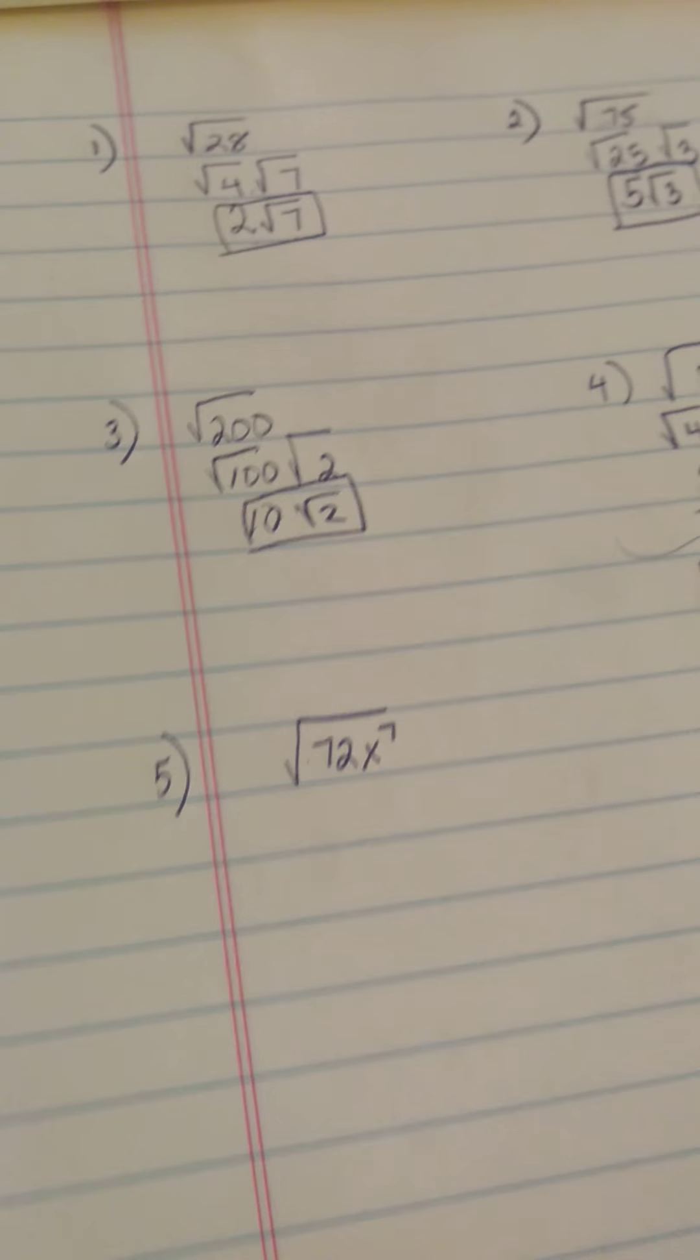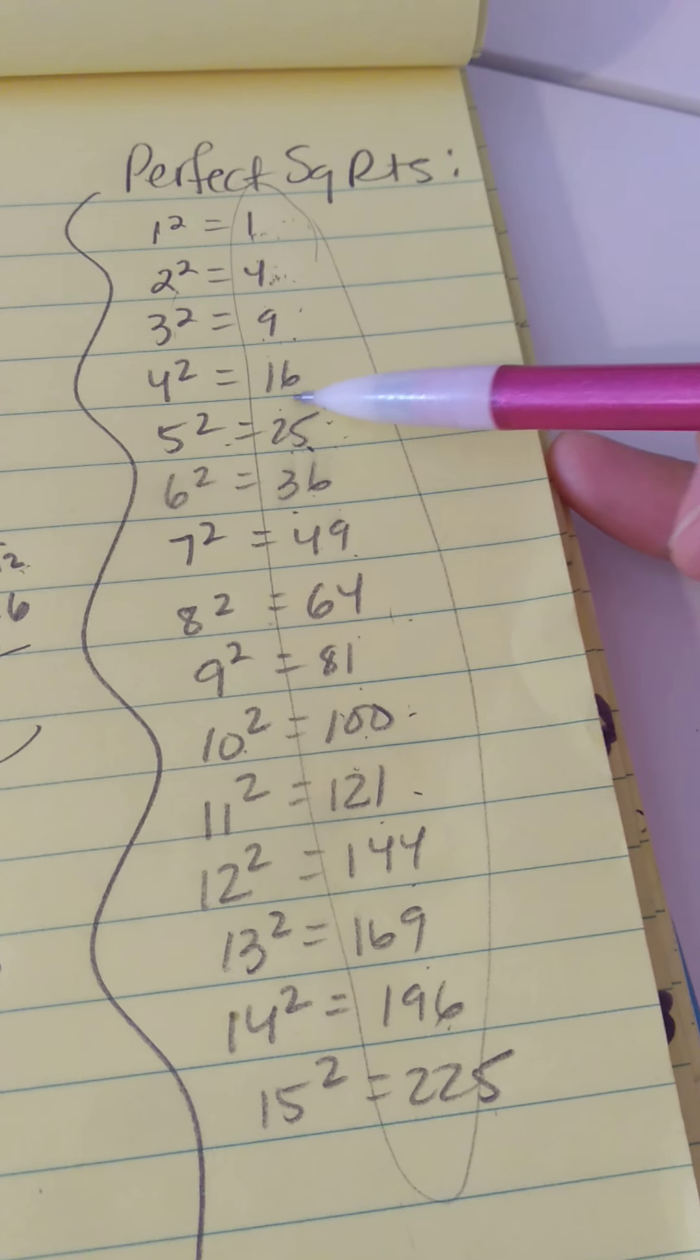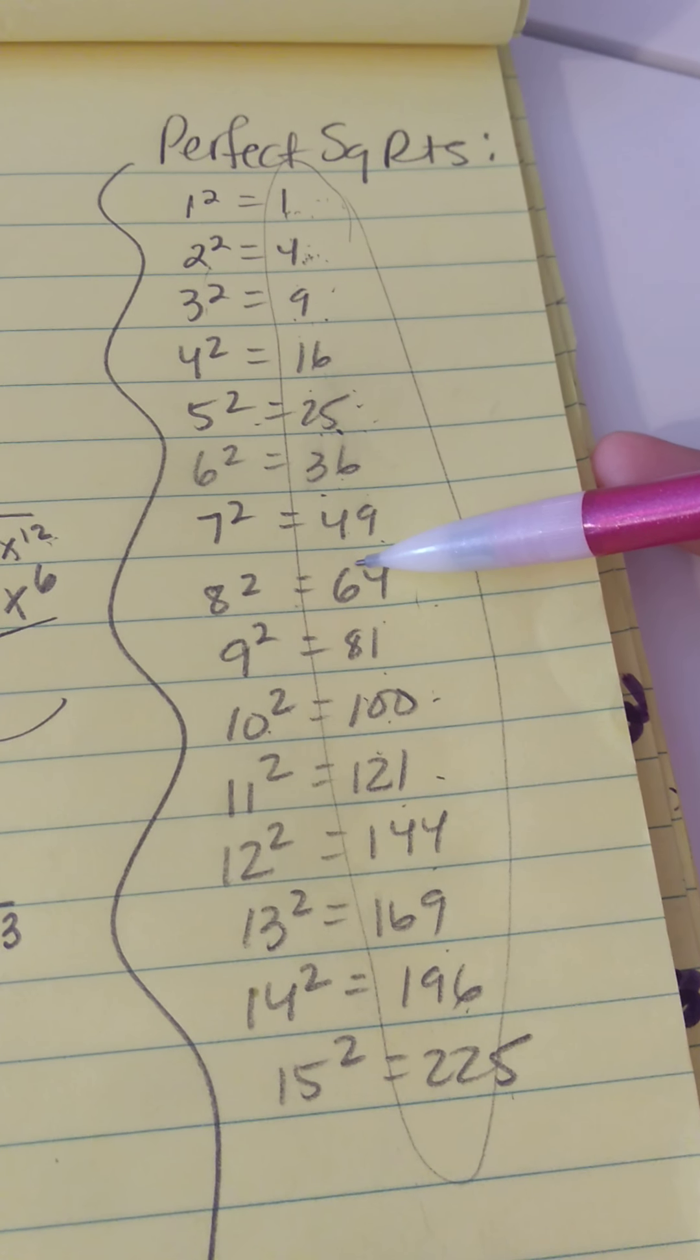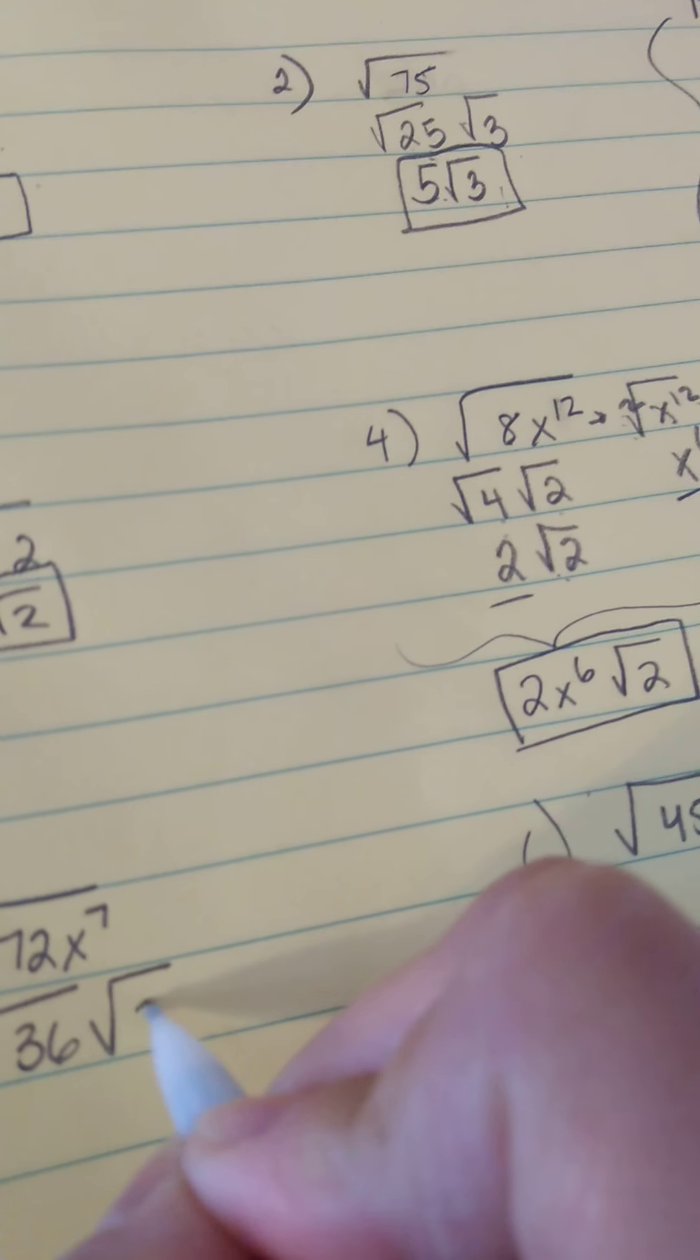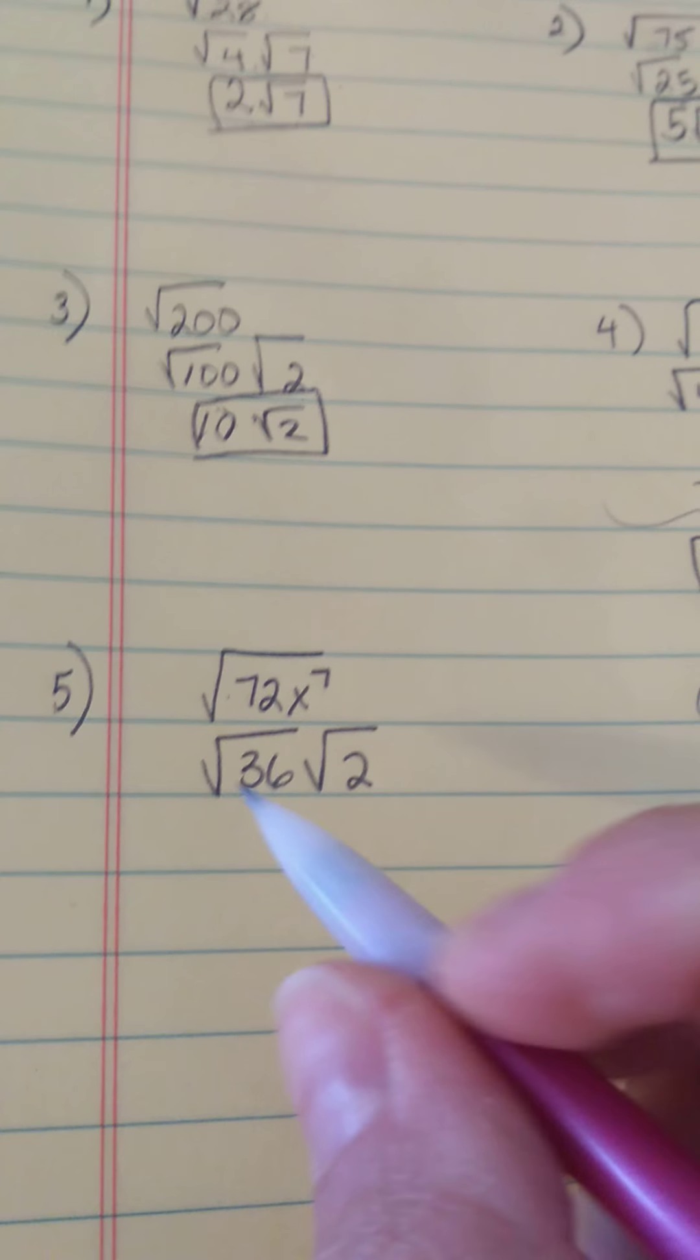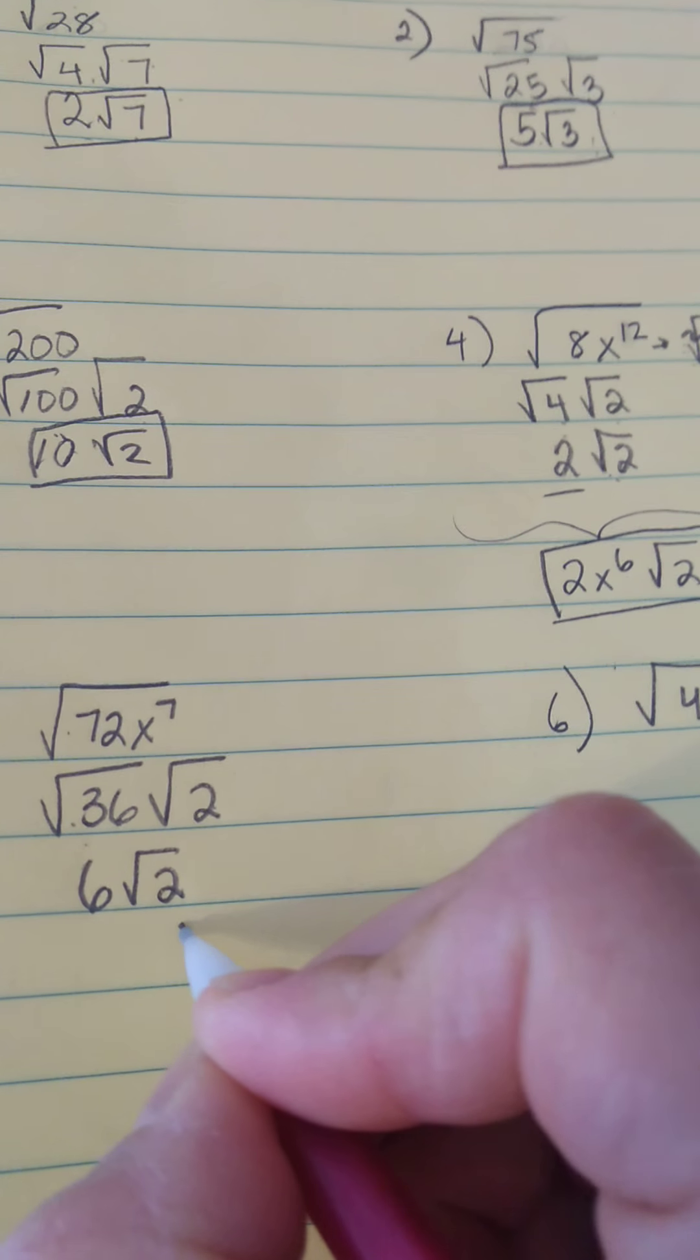All right, let's do another one. 72x to the 7th under the square root. So you have to think to yourself, what is the largest one of these guys that divides into 72? And it has to be evenly. It's 36. 36 divides into 72 twice, or 36 times 2 is 72. So then the square root of 36, that's the one that simplifies just to 6, and the 2 is the prime. It cannot be simplified anymore, so that's done.